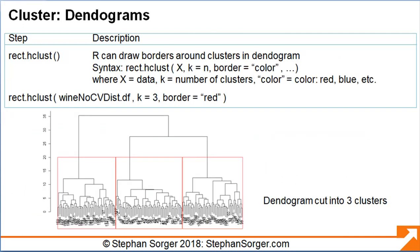To make the clusters more clear, we can invoke the rect.hClust function. The function cuts the tree into the number of clusters you specify and draws boxes around each cluster. In our case, we've drawn red boxes around our three clusters. Dendigrams are useful in industry because they clearly show the structure of the data. In some cases, one can decide to group the data into different numbers of clusters depending on the structure of the dendigram. For example, if we extended our original horizontal line farther down the dendigram, we could assign the data into more clusters, thus giving us more granularity for segmentation.